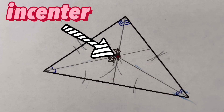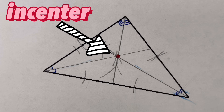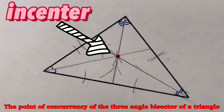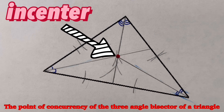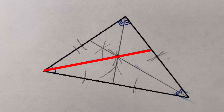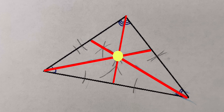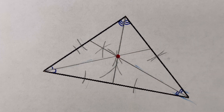We have now created the incenter of the triangle. The incenter is the point of concurrency of the three angle bisectors of a triangle. These three line segments are angle bisectors, and they are all intersecting at this one common point, which we call the incenter of the triangle.